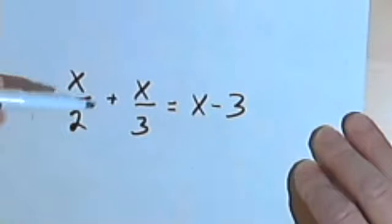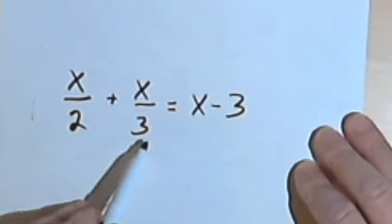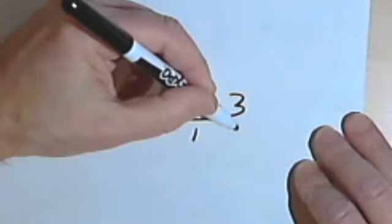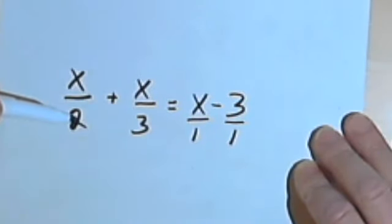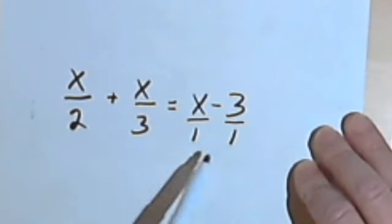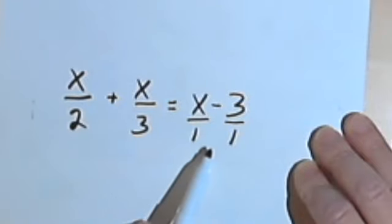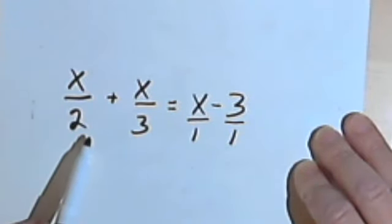All you're going to do is find the lowest common denominator. Remember, if something doesn't have a denominator, you can think of it as having a 1, and then multiply everything by the lowest common denominator. So in this example, the lowest common denominator—if I've got 2s, 3s, and 1s—the lowest common denominator would be a 6.